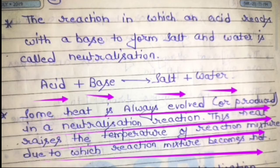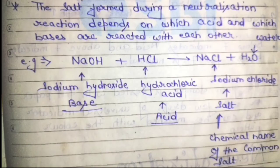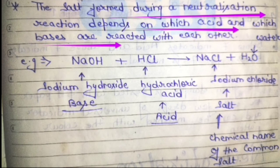The salt formed in a neutralization reaction depends on which acid and which base we use. As you already know, there are strong acids and weak acids, strong bases and weak bases. So when acid and base react, the salt formed may be acidic in nature, or basic in nature, or neutral — it depends on what kind of acid and base we are using.